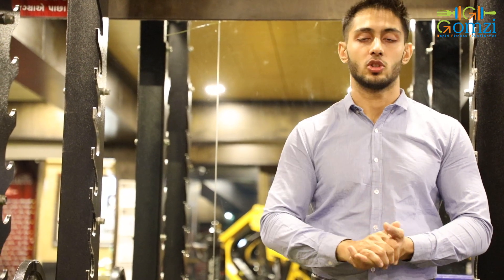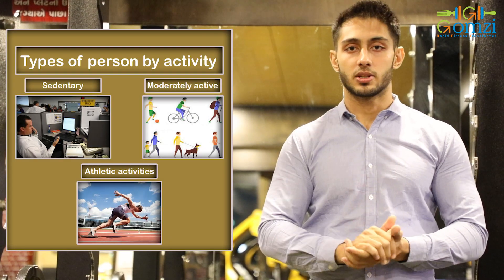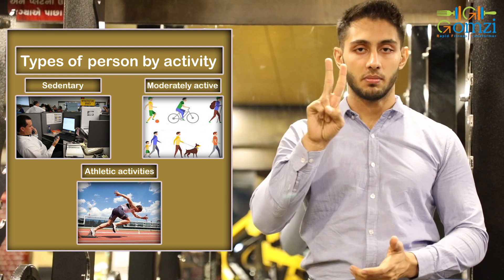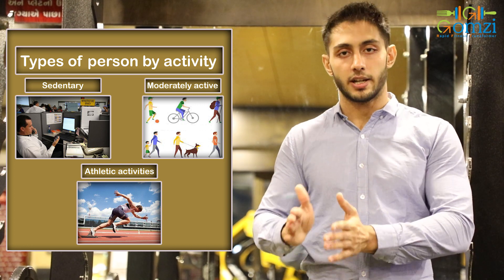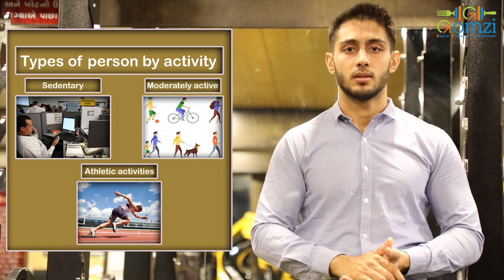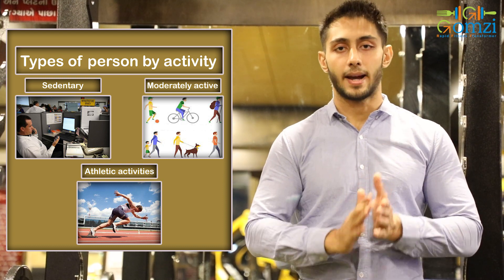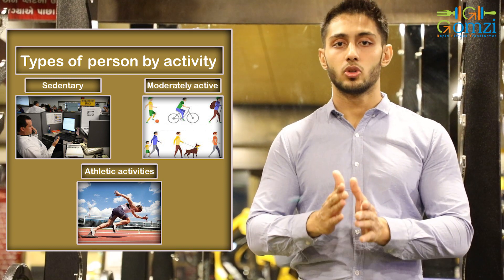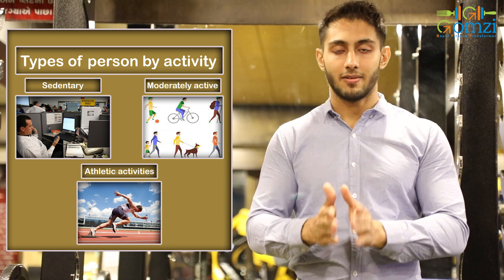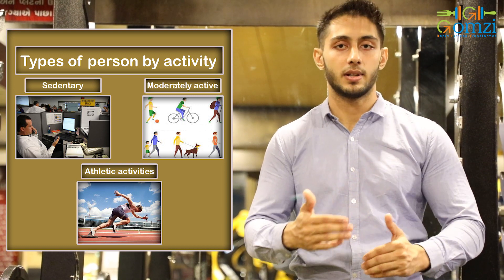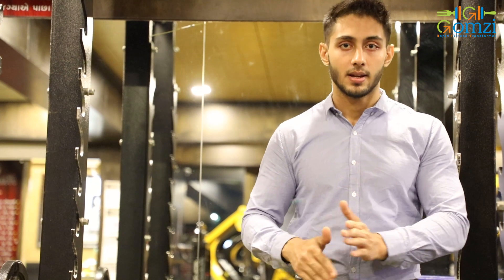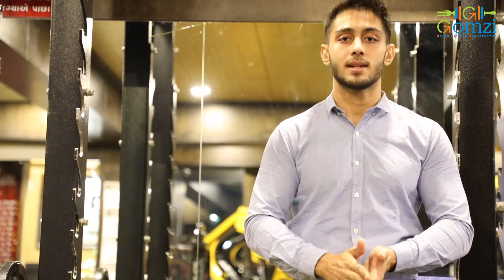There are three types of person you will see in your surrounding. First, a sedentary person who is doing no work at all except daily activity. The second person falls in the moderately active category, which includes a walk, a run, or regular gym activity. The third category is the athlete category, who is primarily doing work as an athlete or sports person. Each category requires separate nutrition and separate fitness plans. We will learn how macronutrients, micronutrients and fitness plans are divided into these three categories in the next separate videos.